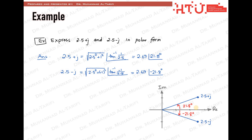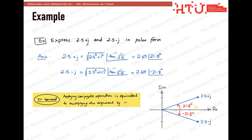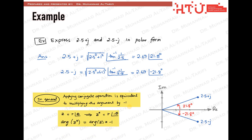This can be generalized: applying the conjugate operation to a complex number in polar form is equivalent to flipping the sign of its phase angle. In writing, the conjugate of r at the phase of theta is r at the phase of minus theta.